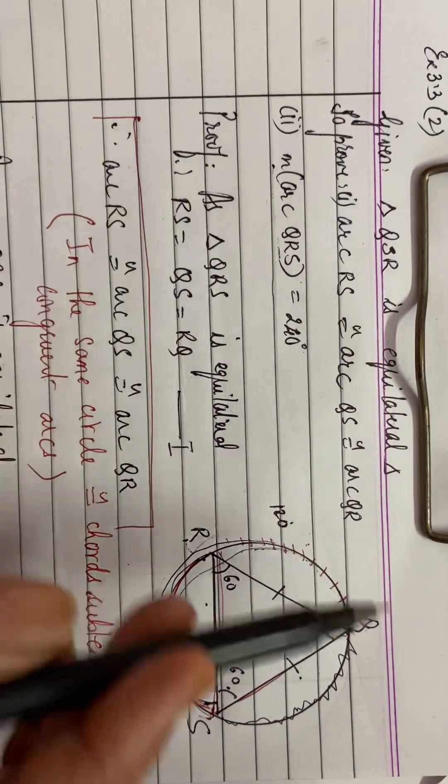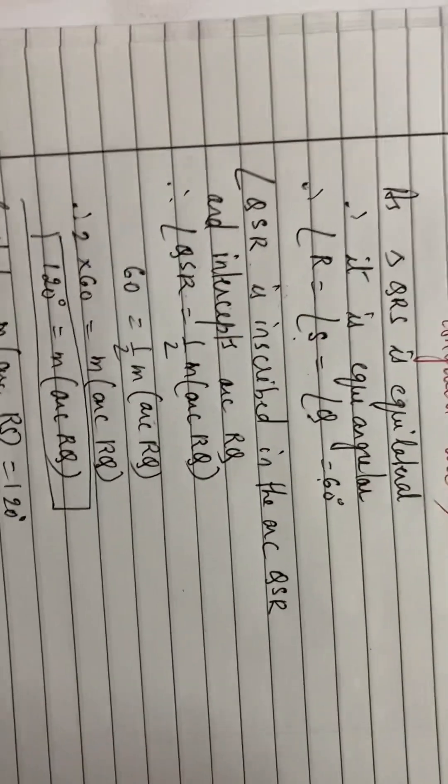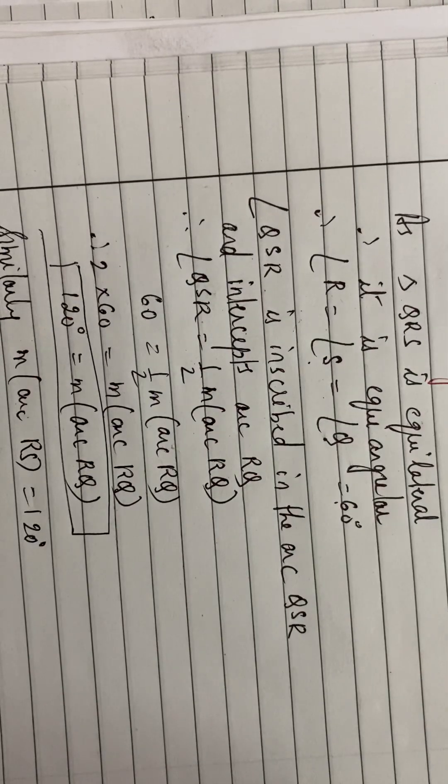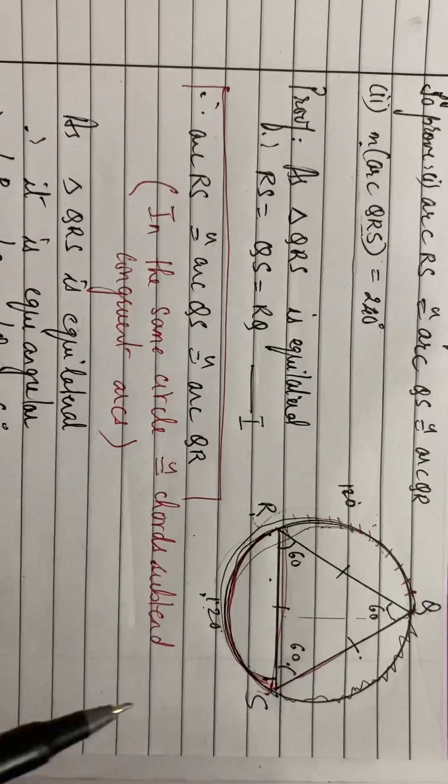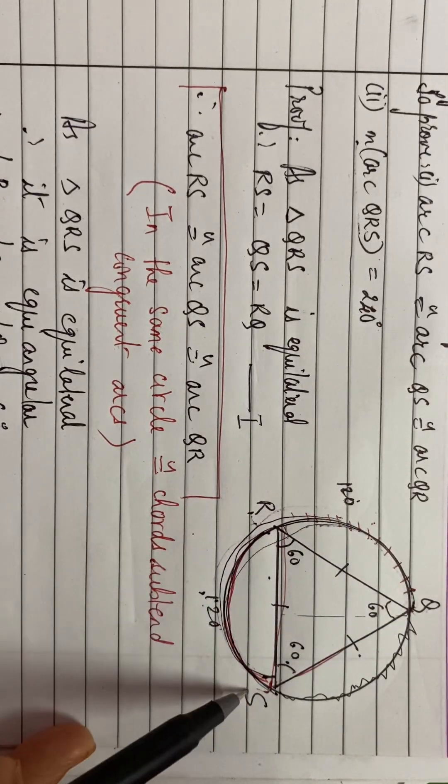See this, this is your arc QRS. So measure of arc QRS, it is made up of two arcs. QRS is made up of two arcs: arc QR plus arc RS.